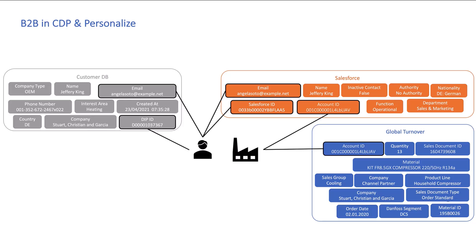I'm going to run through a number of different things that were set up in the system to show how you can basically have both of these kinds of profiles, create segments that include data from both of them, and create decision models for an individual based on account data.